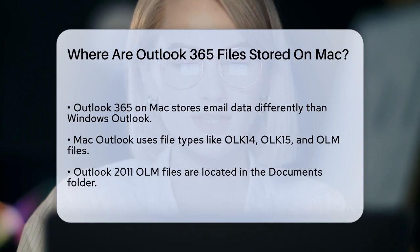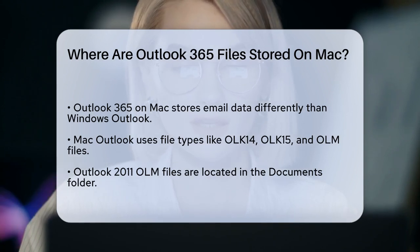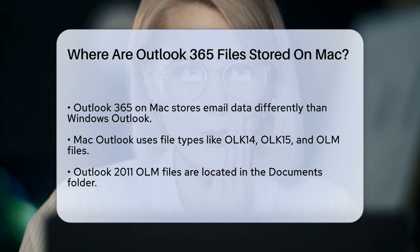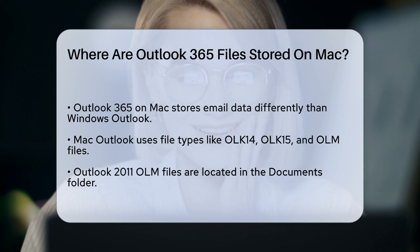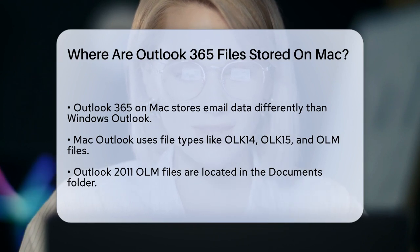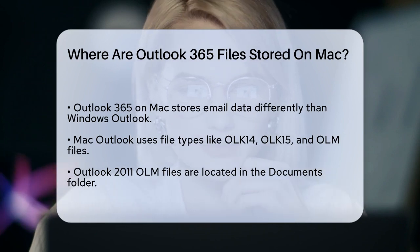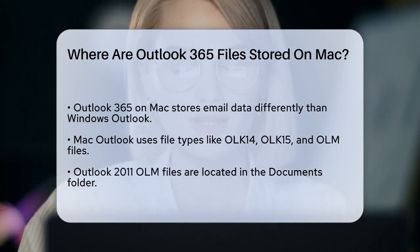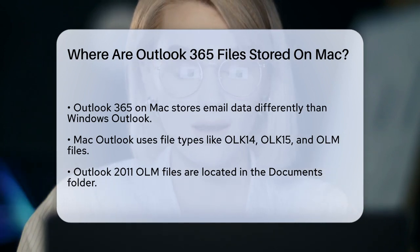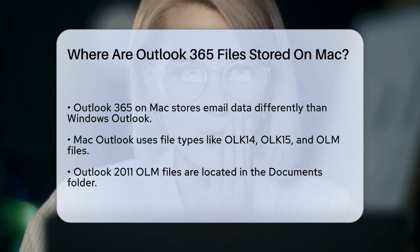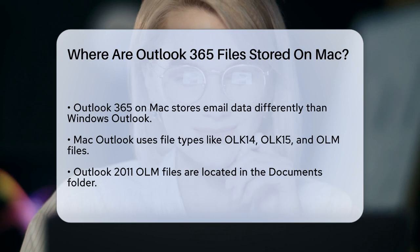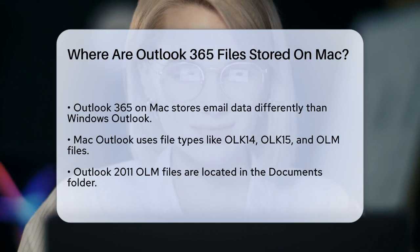First, it's important to know that Outlook 365 on Mac stores its data in a specific format and location. Unlike Windows Outlook, which uses PST files, Mac Outlook uses different file types such as OLK14 and OLK15 files, or in some cases OLM files if you've created them manually.